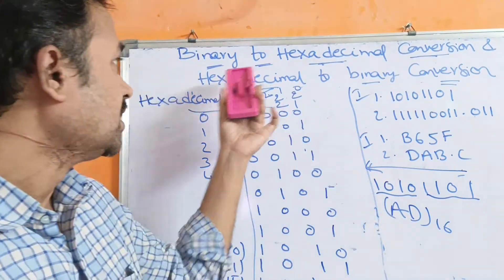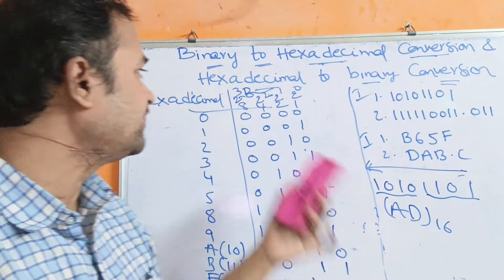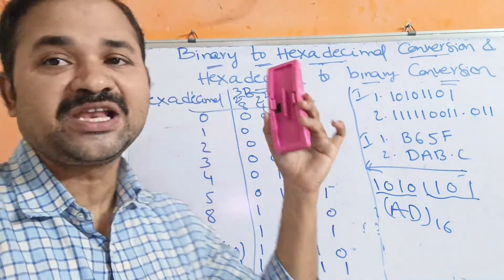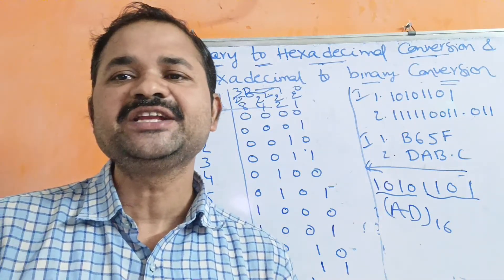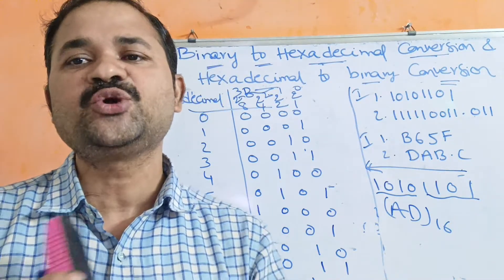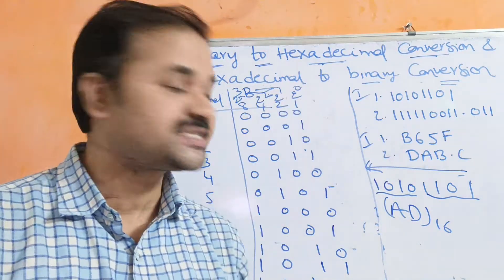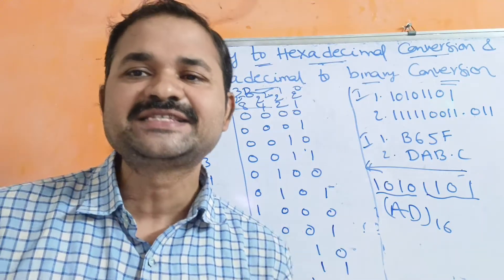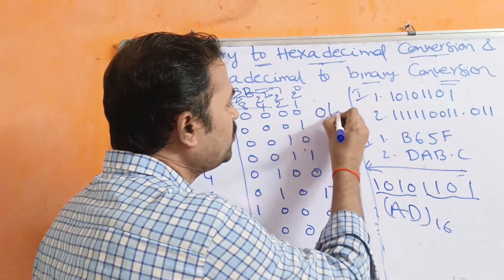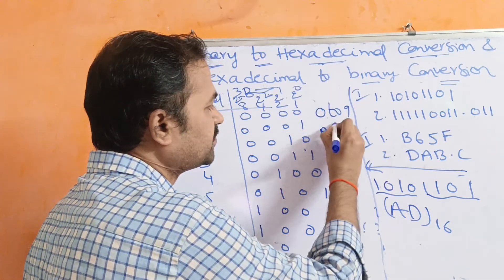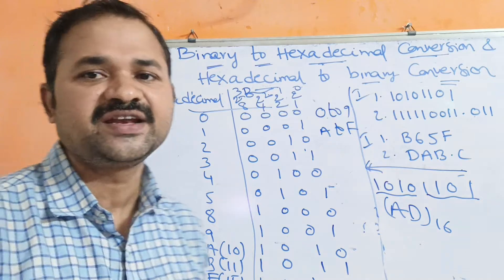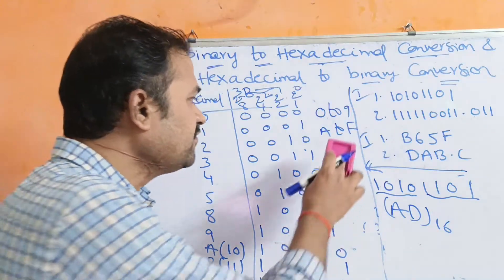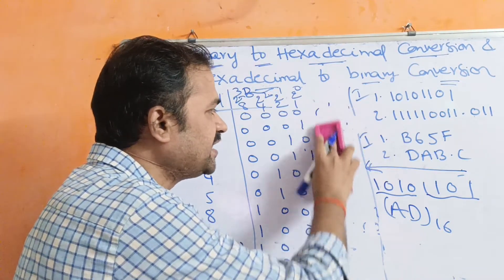Let us discuss binary to hexadecimal conversion and hexadecimal to binary conversion. Binary means base value is 2, and it mainly contains 2 symbols: 0 and 1. Hexadecimal means base value is 16, and it mainly contains 16 symbols from 0 to 9 and A to F. So A means 10, B means 11, C means 12, D means 13, E means 14, and F means 15. Totally we have 16 symbols from 0 to 9 and A to F.